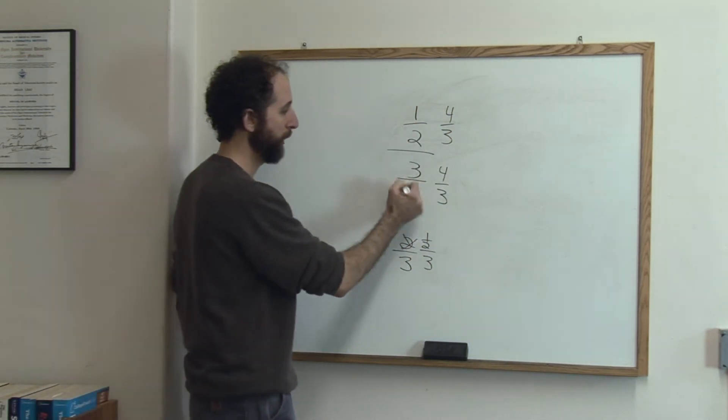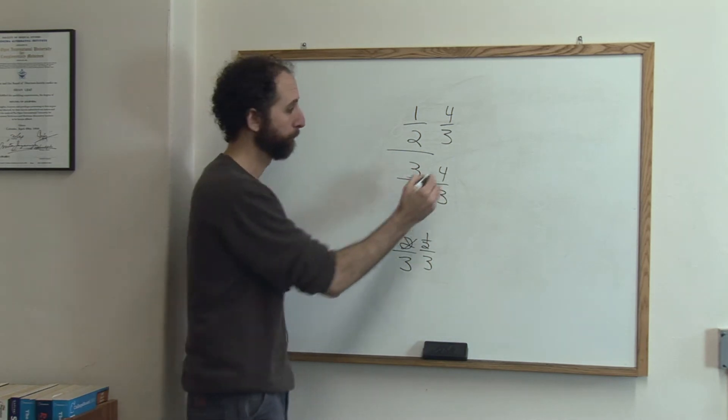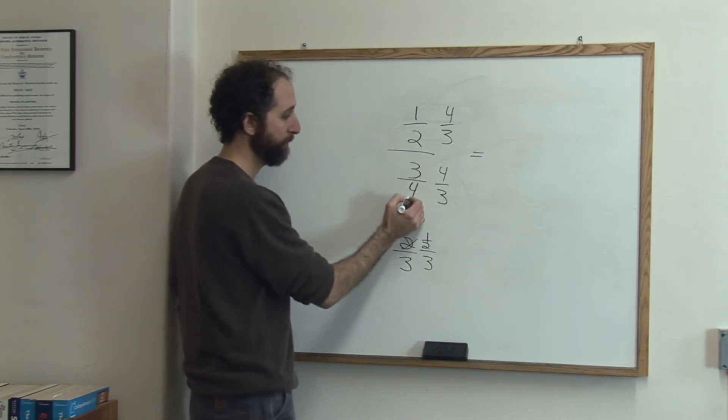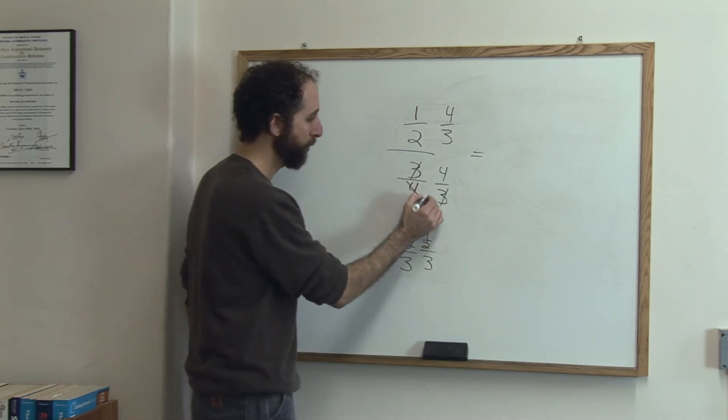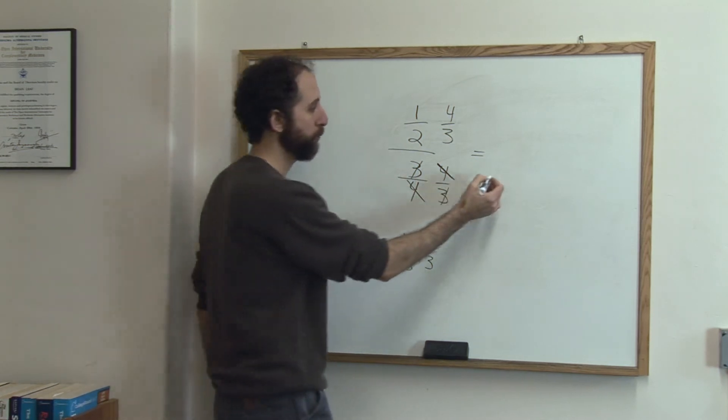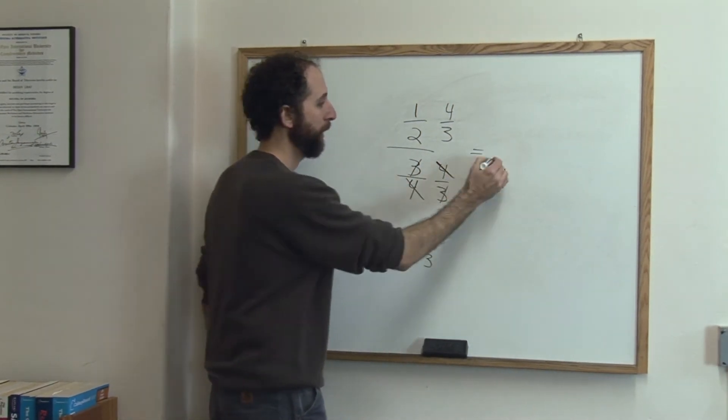So, to eliminate this, we're going to multiply by the reciprocal. The reason we do that is because 3 fourths times 4 thirds, the 3's cross-cancel, the 4's cross-cancel, eliminating that, making it just 1 on the bottom.